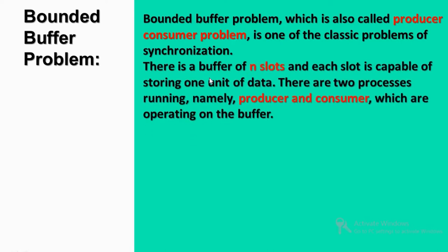So what are we going to do? There is a buffer of n slots. Under the buffer, there are n slots. In one slot, we store a particular data, and each slot is capable of storing one unit of data. So the buffer is nothing but the storage area — that means we store data, which is separated into n number of slots.